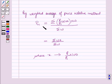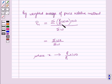Here, P01 is the price index number for the current year with reference to the base year. W denotes the weights, and P1 over P0 into 100 are the price relatives, where P1 denotes the current year prices and P0 denotes the base year prices for the commodities under consideration.